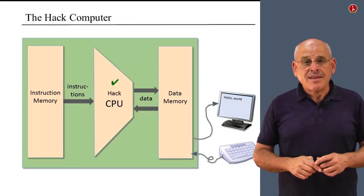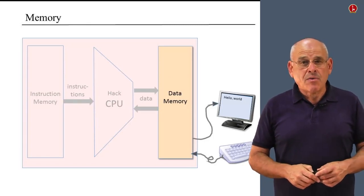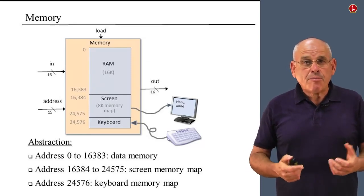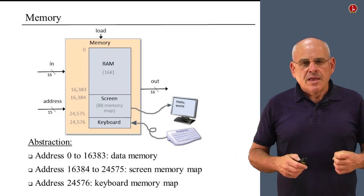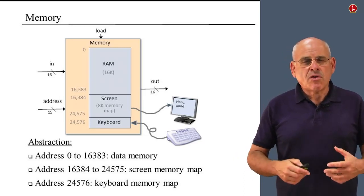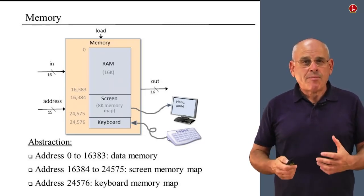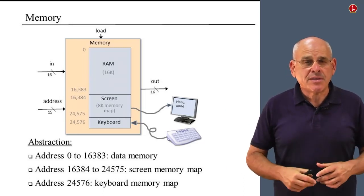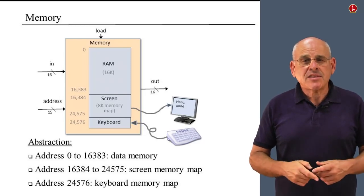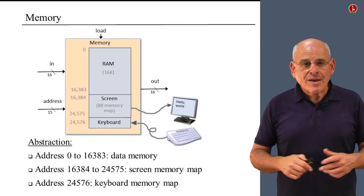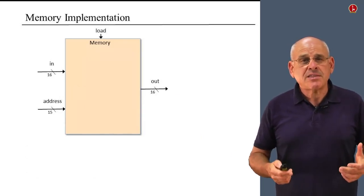Let us discuss the data memory. The data memory is the area in which we store all the data of the program. From a programmer's perspective, it's convenient to think about it in terms of three logical segments: addresses 0 up to 16K store the data the program generates and manipulates; the next 8K stores the screen memory map — to draw something on screen you manipulate bits in this segment; and finally, the last register reflects which key is currently being pressed on the keyboard.